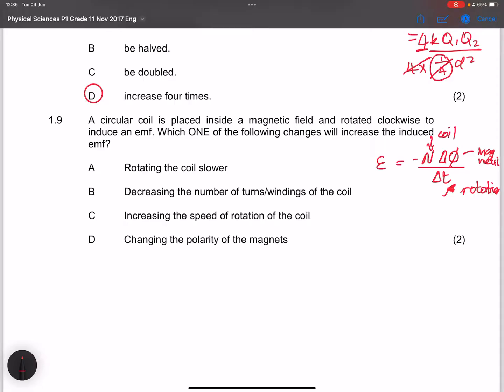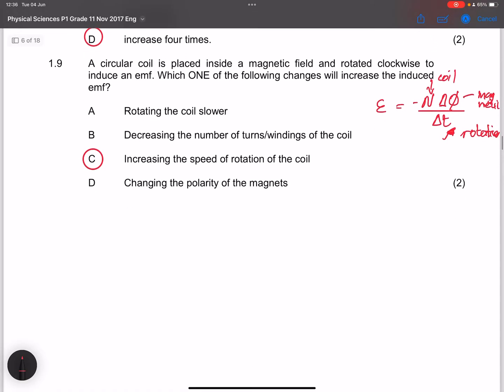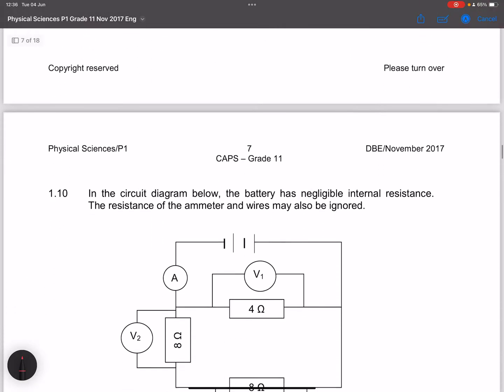They say to us, we wanted to improve the EMF. They said rotating the coil slower, that's definitely not true. Decreasing the number of turns, not true again. Increase the speed of rotation - that definitely does look true there. If I increase the rotation speed, it will improve the EMF significantly. And then they said changing the polarity of the magnets, definitely that will not do it, because changing the polarity will just change the direction of the current.